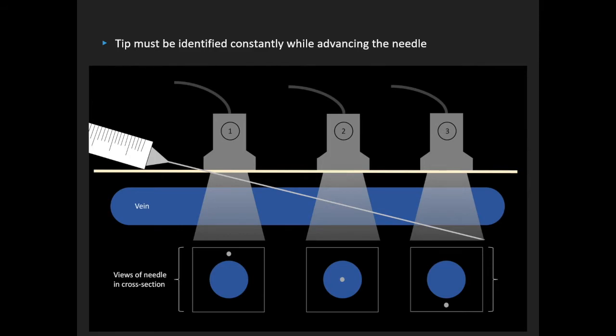Sometimes the needle shaft is misinterpreted as a target sign instead of the needle tip. To confirm the tip, the ultrasound plane can be fanned distal to the needle — the target sign should disappear and reappear once the ultrasound plane is brought back to its original location.